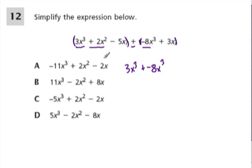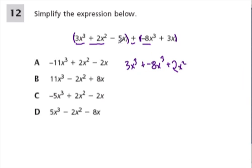Now I have 2x squared. There's nothing to add it to over here, so I'm just going to rewrite that, 2x squared. Here, negative 5x plus positive 3x. So negative 5x plus 3x. So these are my pairs that I'm looking at.